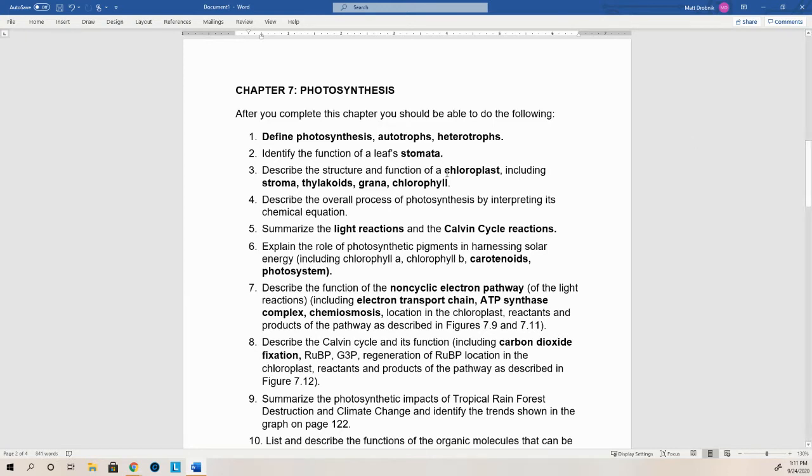You should know the function of the chloroplast. This is the organelle responsible for photosynthesis. The stroma is the equivalent of cytoplasm. This is the aqueous solution with all the materials needed for photosynthesis. That's inside the chloroplast. The thylakoid is that folded membrane, the inner membrane on my chloroplast, and it's folded into these stacks. They look like stacks of pancakes and we call those grana. And chlorophyll is the pigment that's located within the thylakoid membrane that captures solar energy.